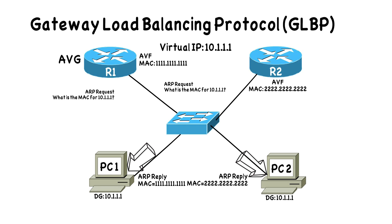If router R2 were to go down, that would be detected by router R1, and R1 would become active for the all-twos virtual MAC address. There are some timers that say how long the AVG will continue giving out that virtual MAC address in response to ARP queries, and how long router R1 is going to continue servicing that MAC address. We'll talk about those timers in our next video when we get into the configuration.